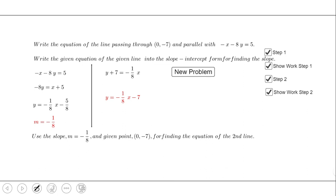That is the equation of the line parallel to the given line that passes through (0, -7).